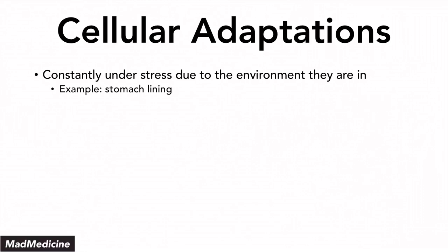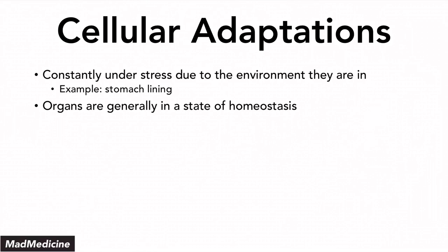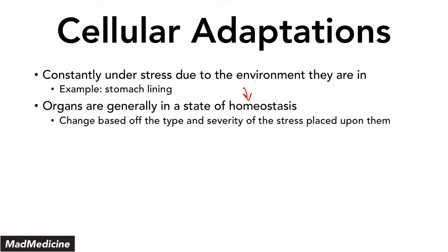At an organ level, organs are generally in a state of homeostasis because they're able to tolerate a certain level of stress. If you increase the stress too much, it exceeds their capacity and the organ has to change to remain in homeostasis. The way it changes is based on the type and severity of the stress placed upon the organ.